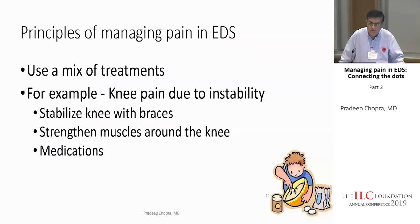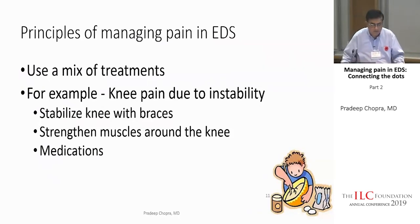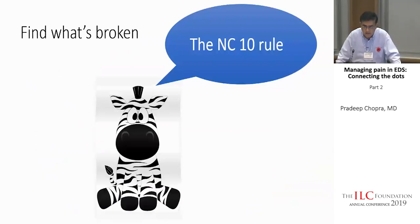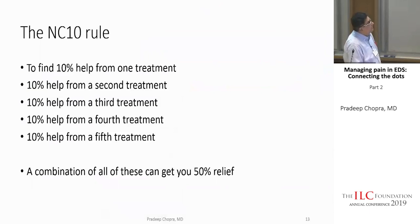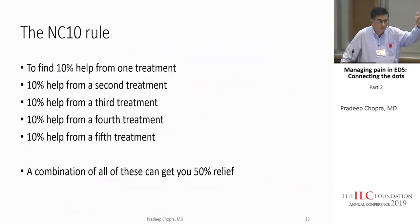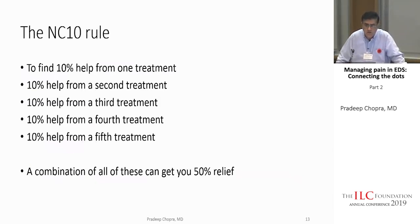You have to use a mix of treatments. For knee instability, you might stabilize the knee with braces, strengthen the muscles, try medications and physical therapy. Don't expect one magical treatment to fix everything. This is the NC-10 rule: if you get 10% relief from one treatment, add another for another 10%, and so on. Five treatments gives you 50% relief — braces, acetaminophen, physical therapy, each contributing 10%.